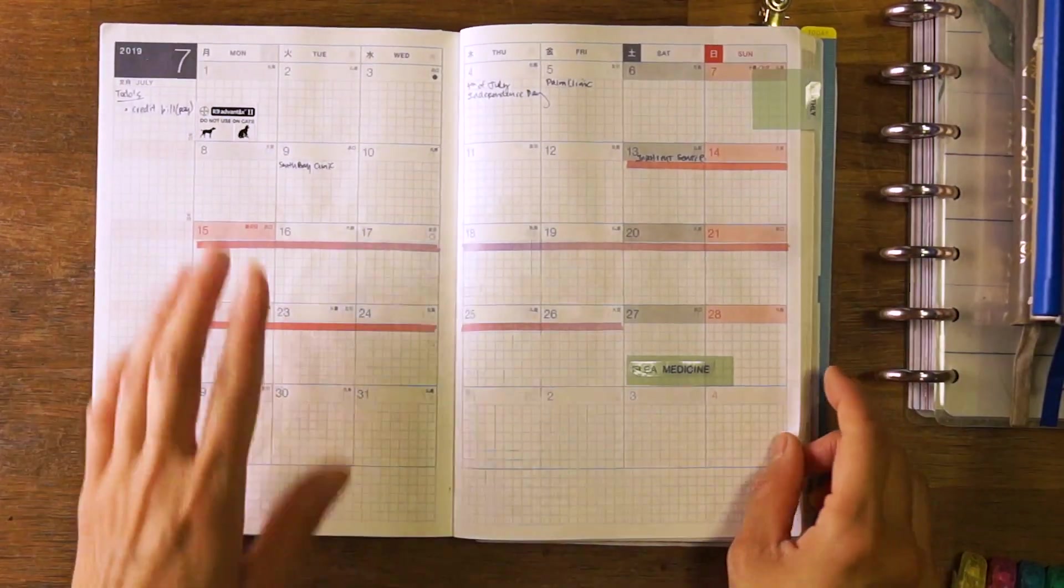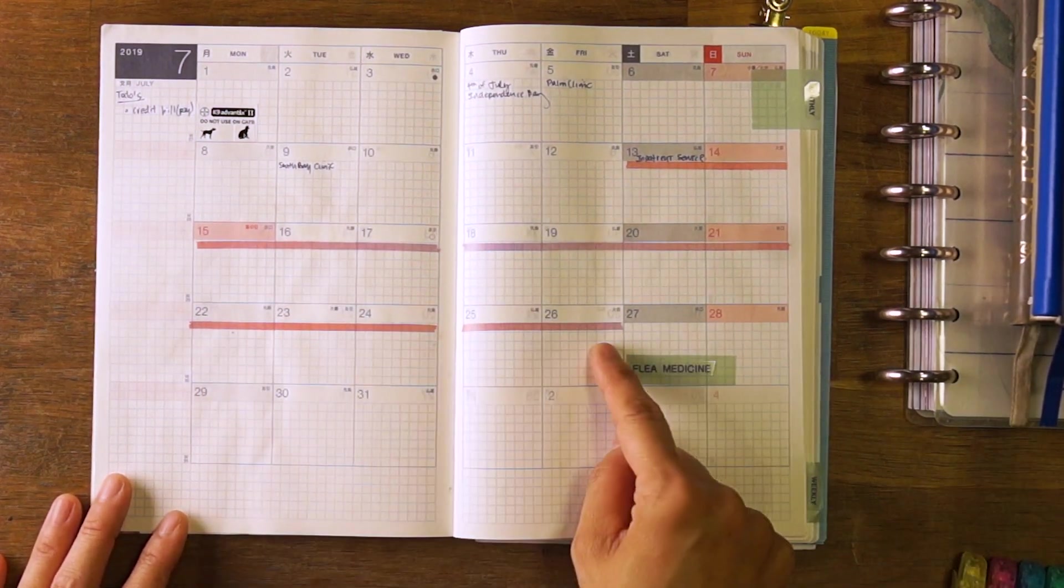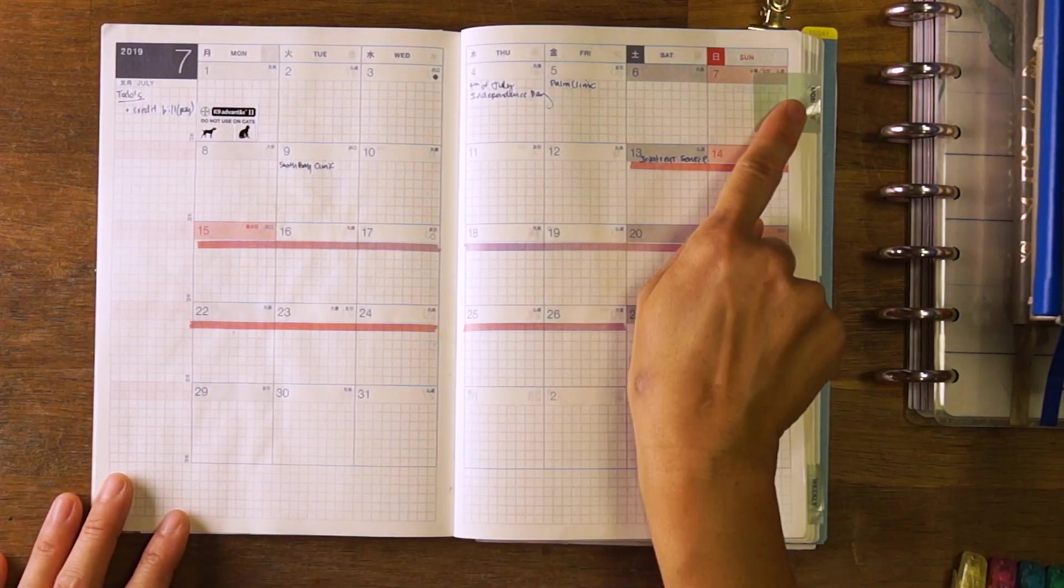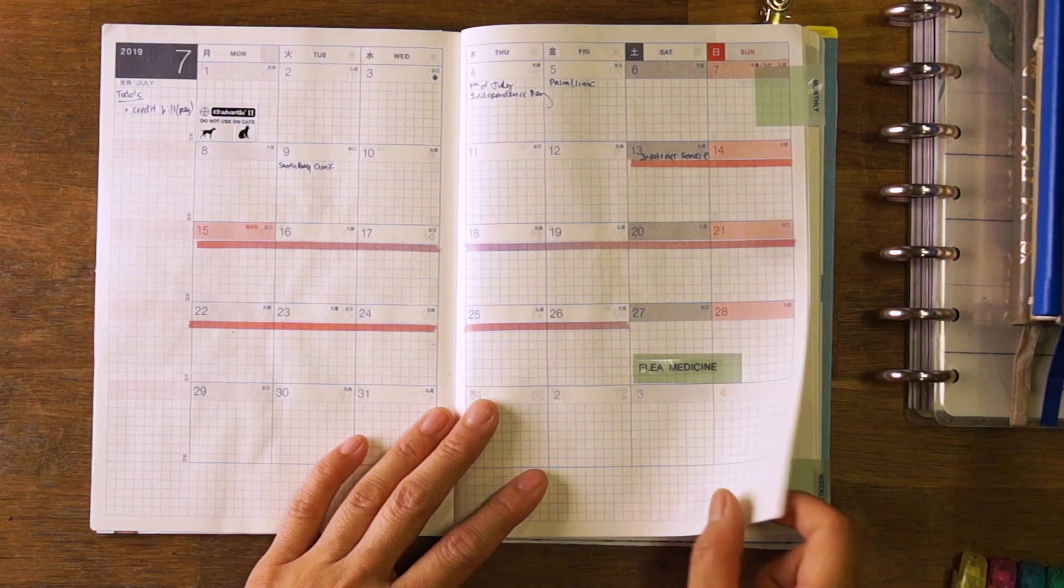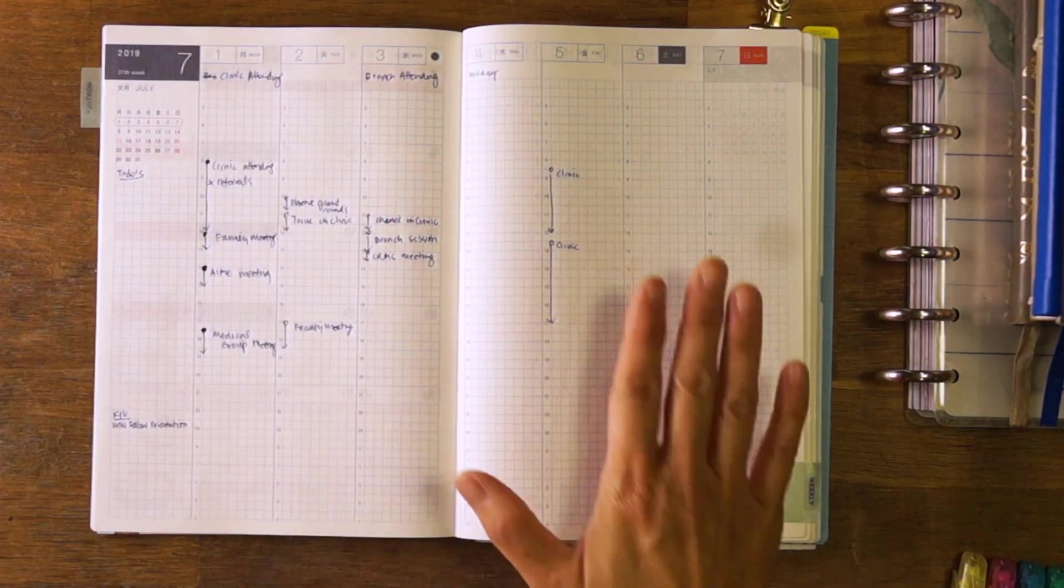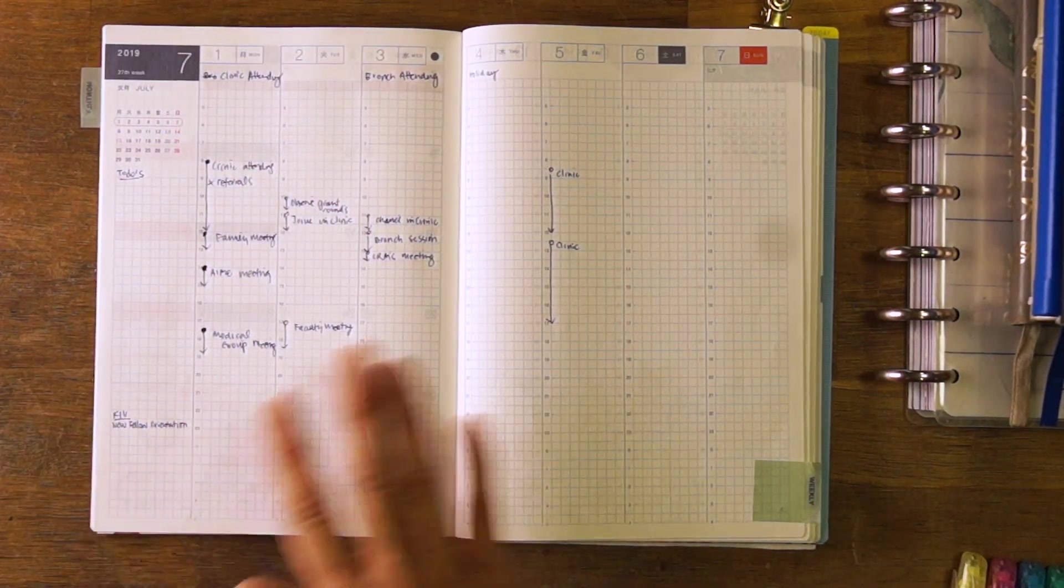I already did my monthly. I added some washi tape for some bigger events that I have coming up. I put my little flags on here so that it's easy to get to. Here's my weekly and I put in my events.